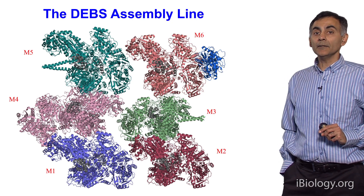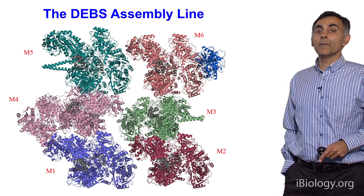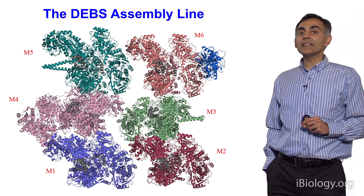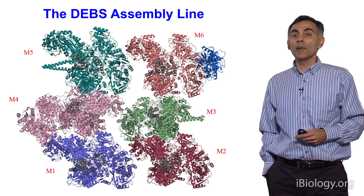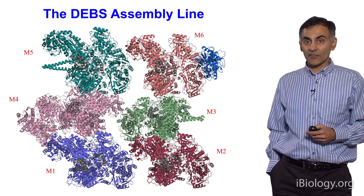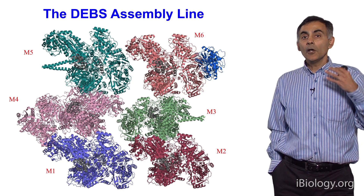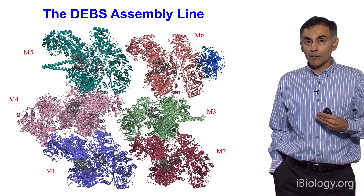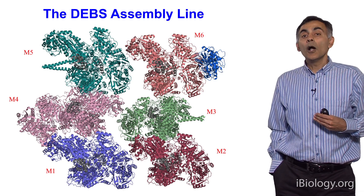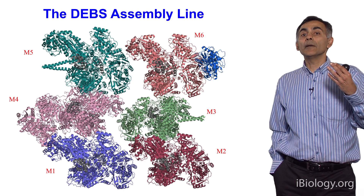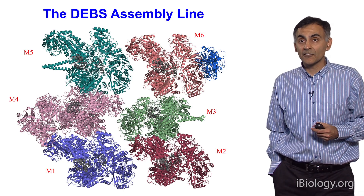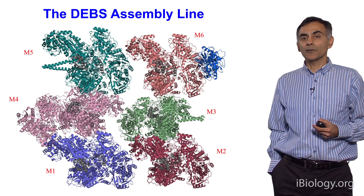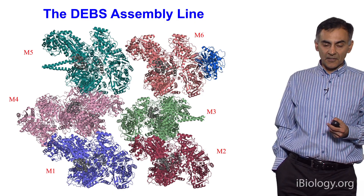I will stop here. Hopefully this gives you a basic overview of what these assembly line polyketide synthases are, what chemistry they do, and what they look like — or at least our best guess today of what they look like. In subsequent modules, we'll talk about other aspects of these remarkable machines in nature. Thank you.